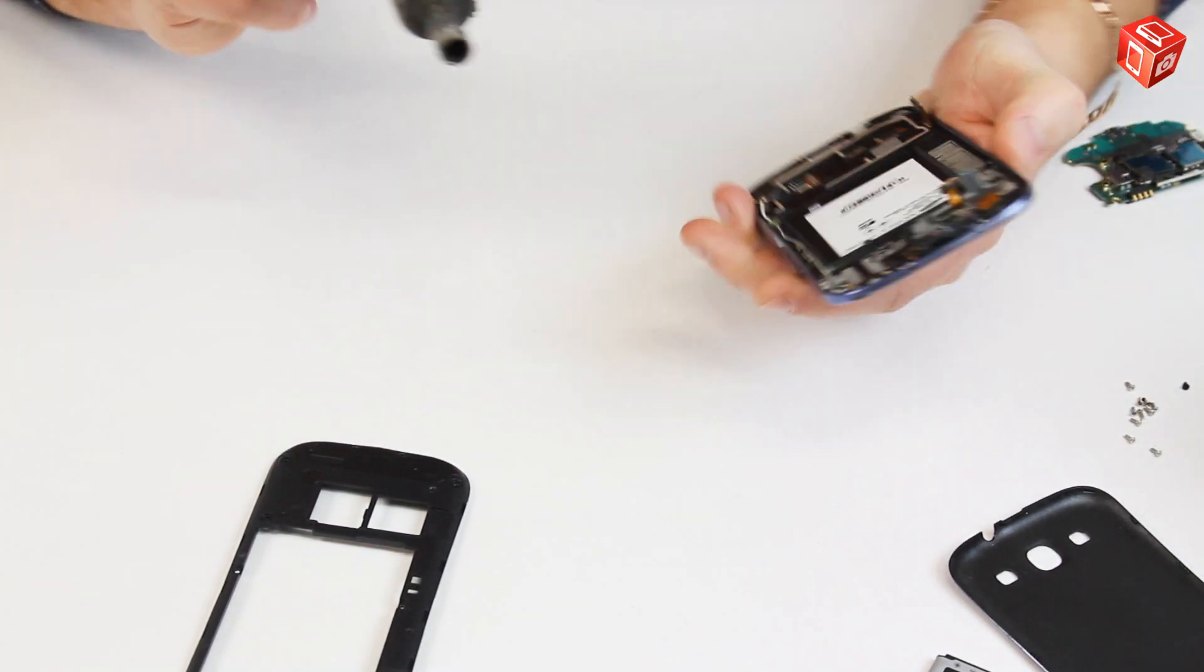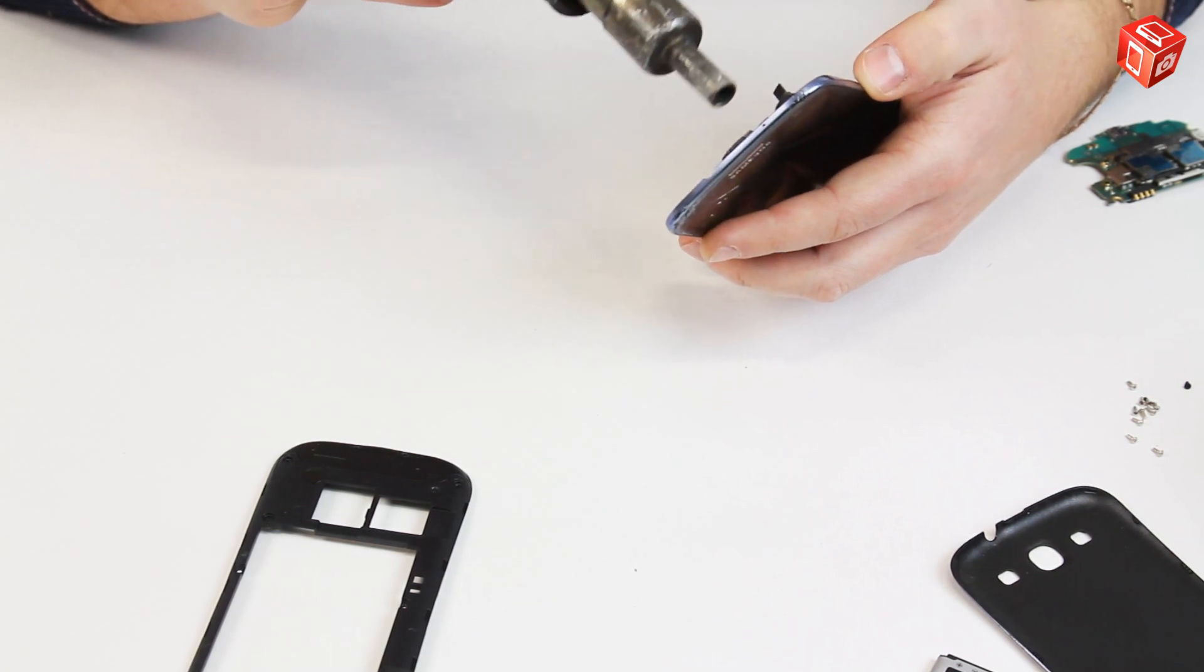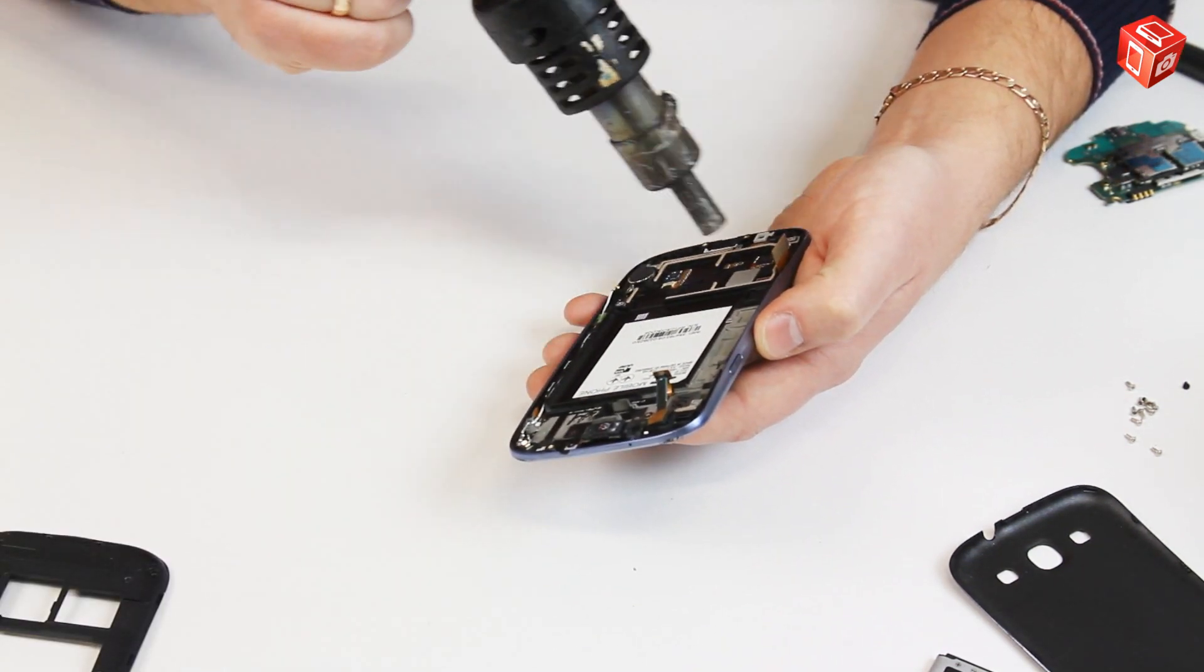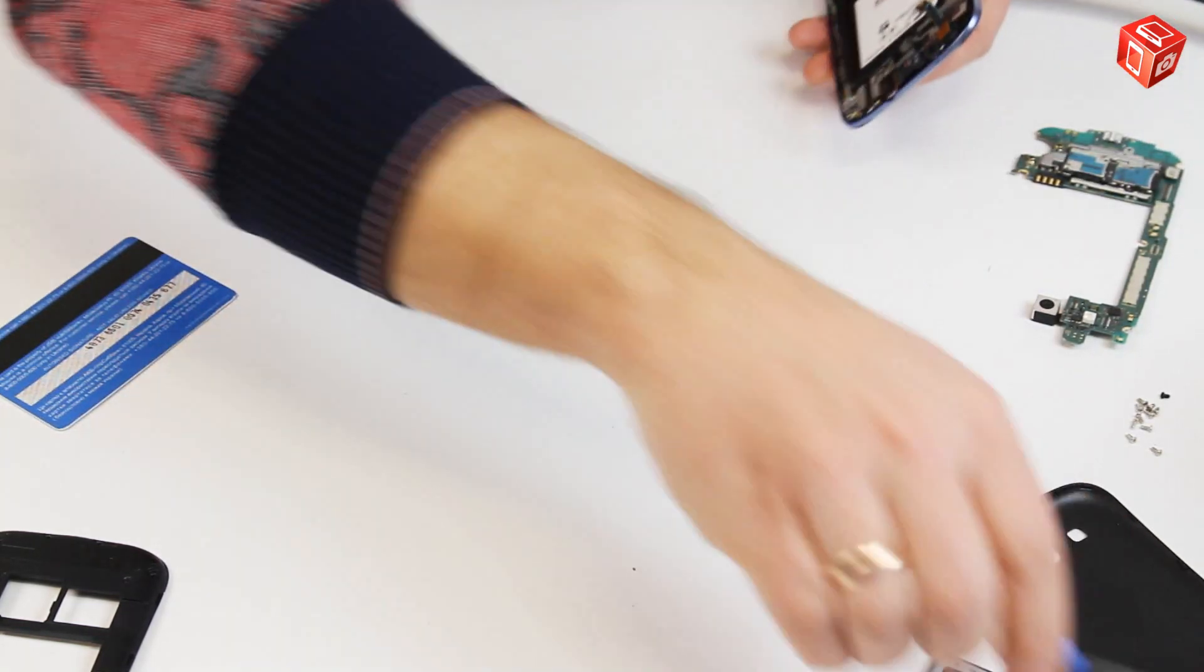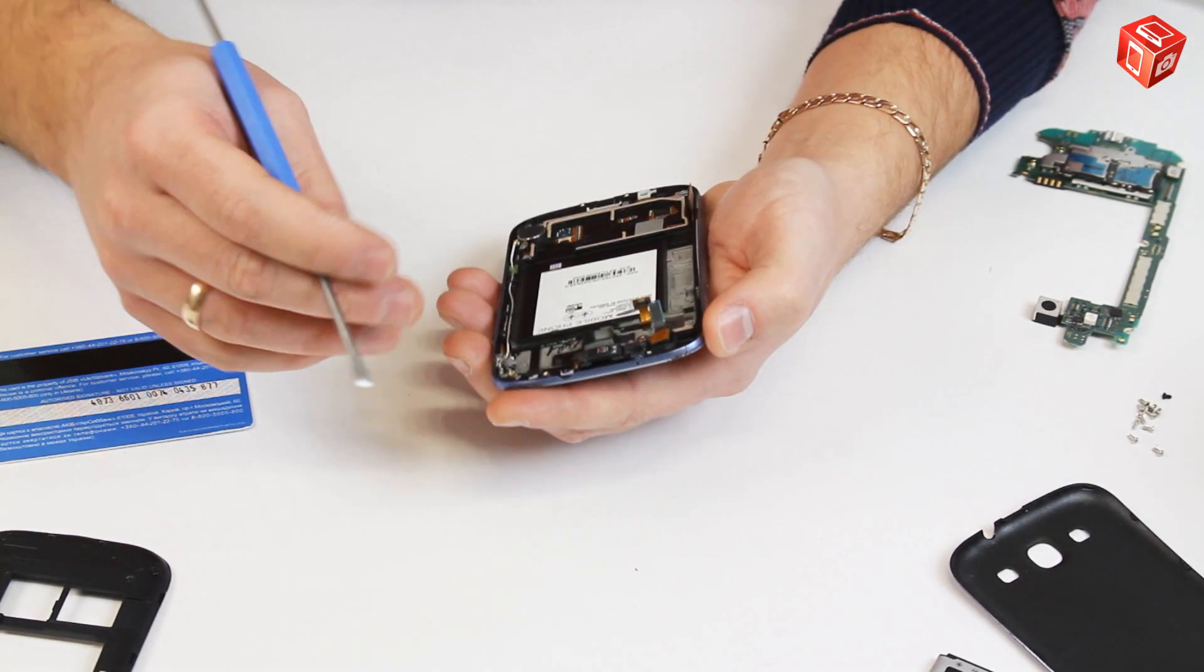Separate the display frame from the display module. Here we use the hot air soldering station. The temperature is about 100 to 140 degrees Celsius. And a metal tool. We use a plastic card, but you can use a mediator if you have one.